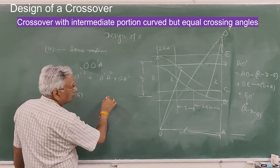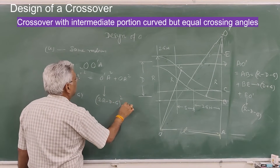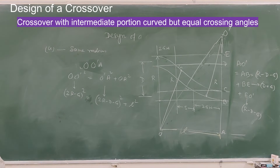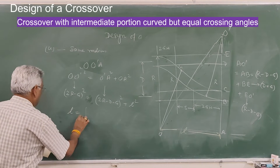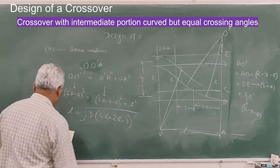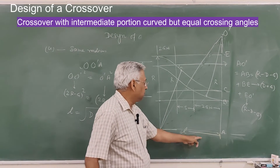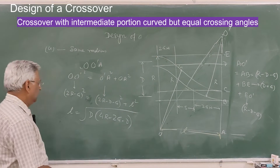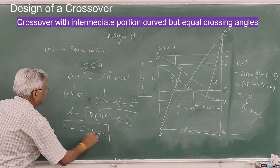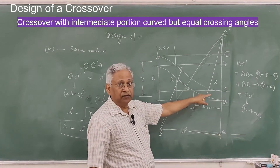Simplifying the equation gives L equals square root of D into (4R minus 2G minus D). That is the overall length of the crossover for the curved intermediate case with equal crossing angles. S is then L minus 4GN, and L is given by that equation.